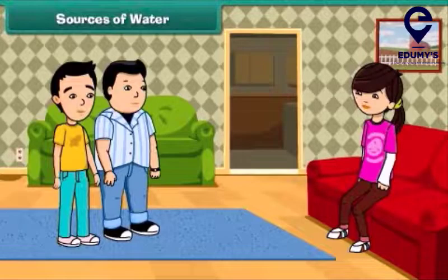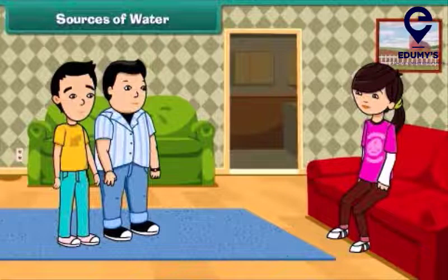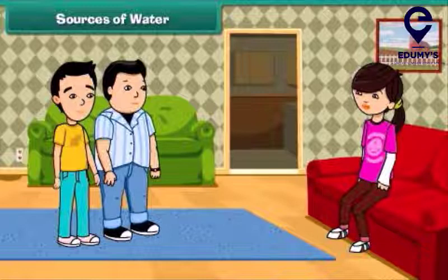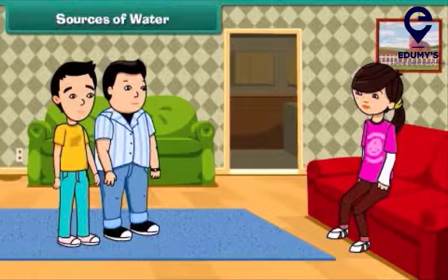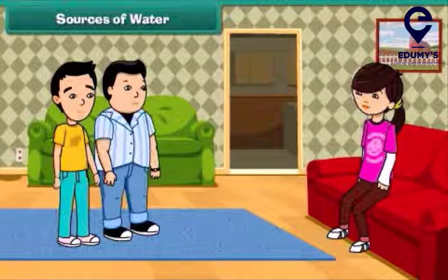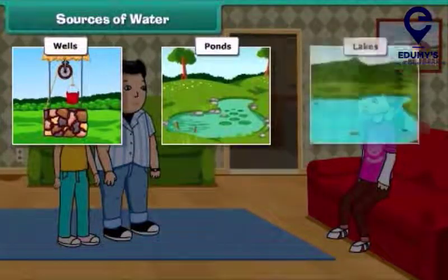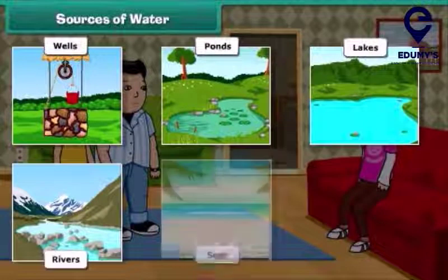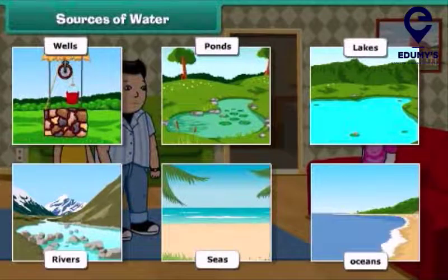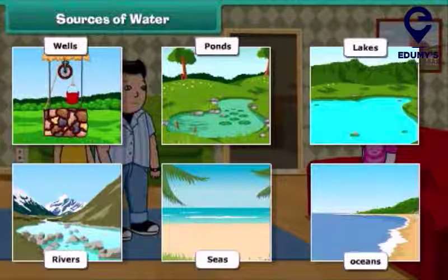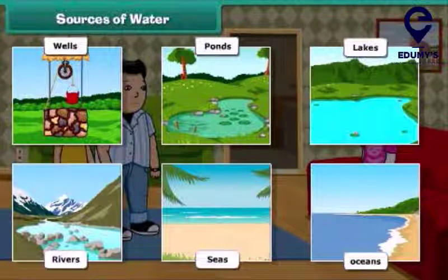Sister, from where can we get water? Oh, you are asking about the sources of water. Actually, water has a limited number of sources like wells, ponds, lakes, rivers, seas, and oceans. Besides these, groundwater is also an important source of water.